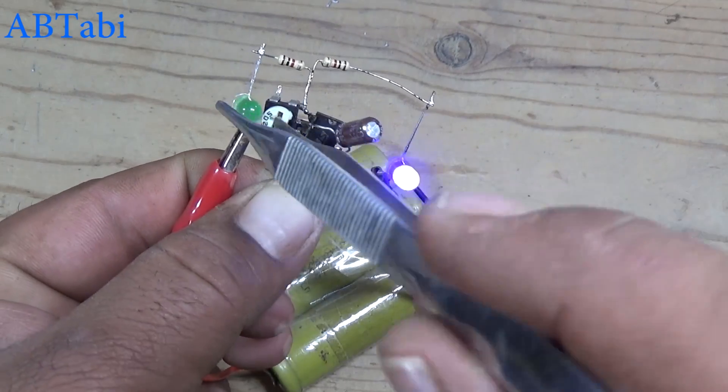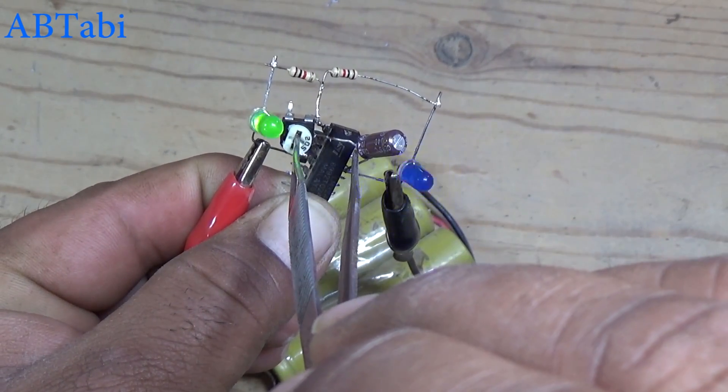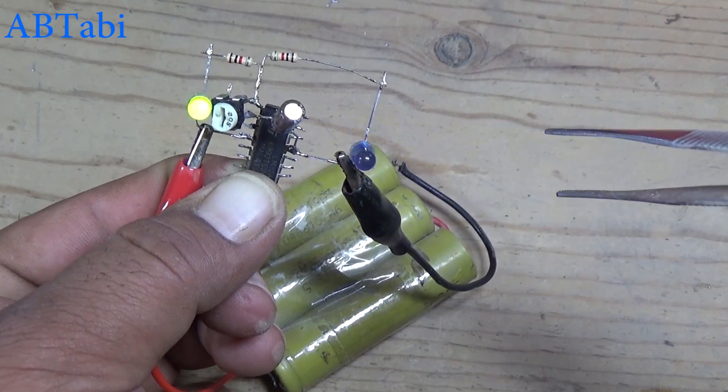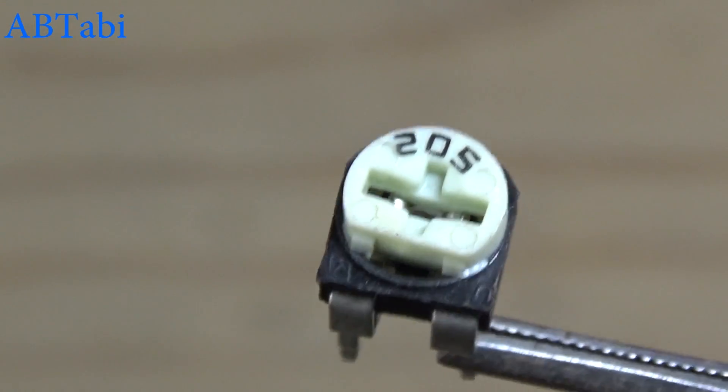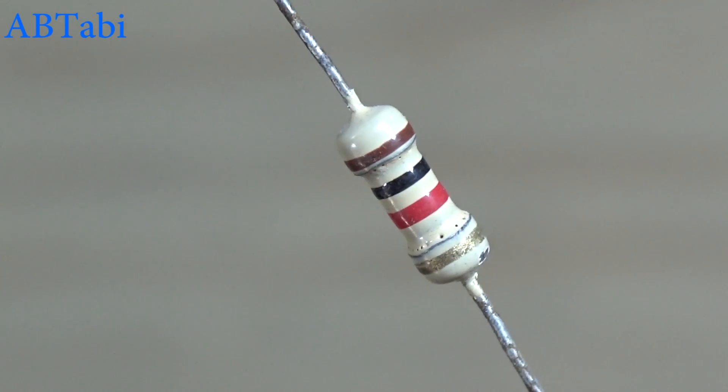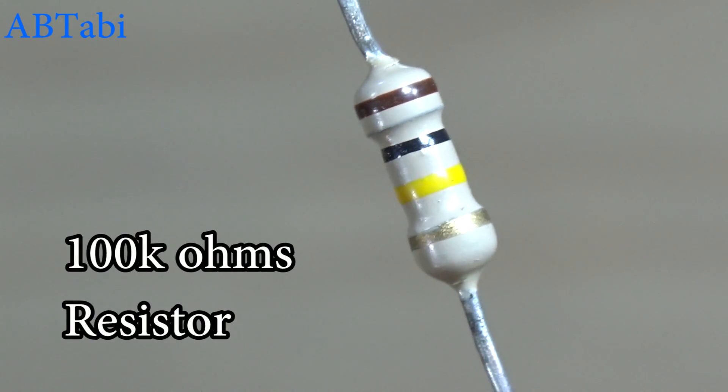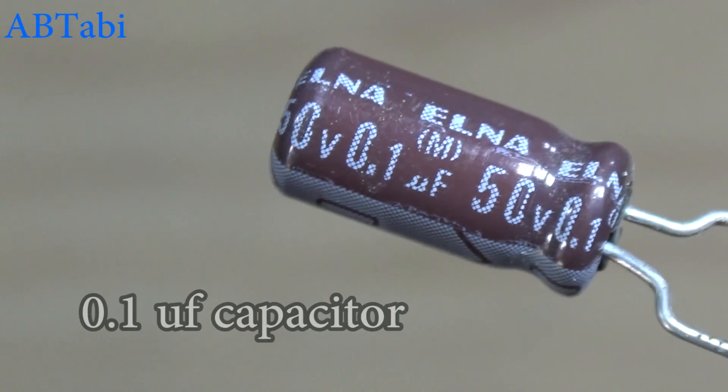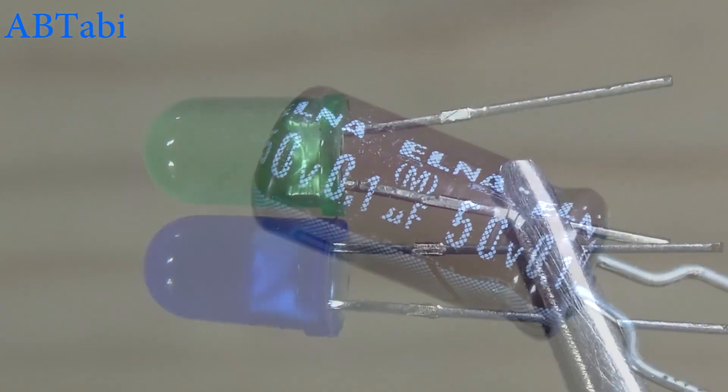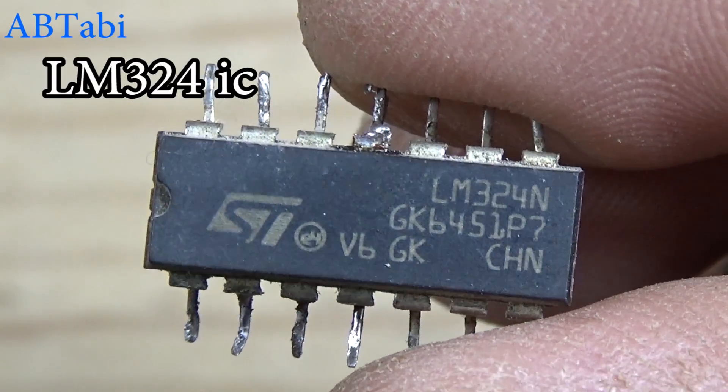Now we learn how to make an adjustable flip-flop flasher using LM324 IC. We use components: 2 million ohms variable resistor, 1K ohm resistor, 100K ohm resistor, 0.1UF capacitor, some LED diodes, and LM324 IC.